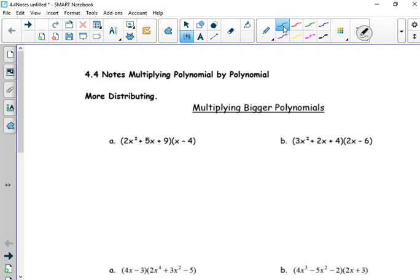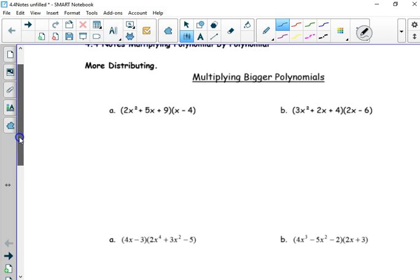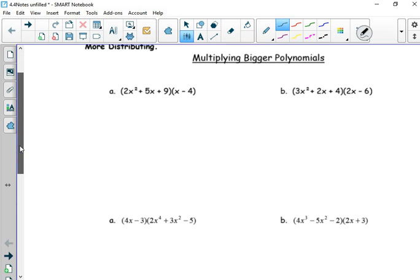All right, so just more practice on distribution, but with a little larger head in a binomial times binomial. So same thing here. There's, think about it this way. There's three terms in the first parentheses. There's two terms in the second parentheses. If you multiply three by two, you're going to get six. So there should be six terms in your next step, not the final answer, but your next step.